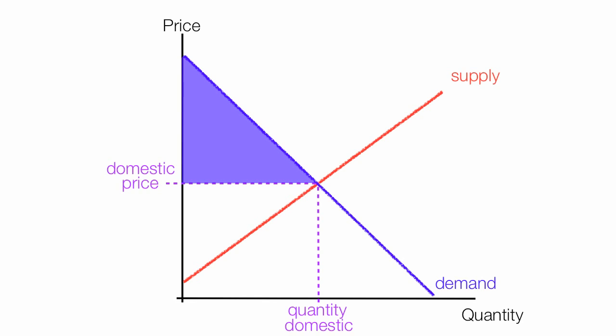This is the consumer surplus, the area above price and below the demand curve. I have other videos that discuss consumer surplus in detail. The red area is producer surplus, which is the area above the supply curve and below the price.